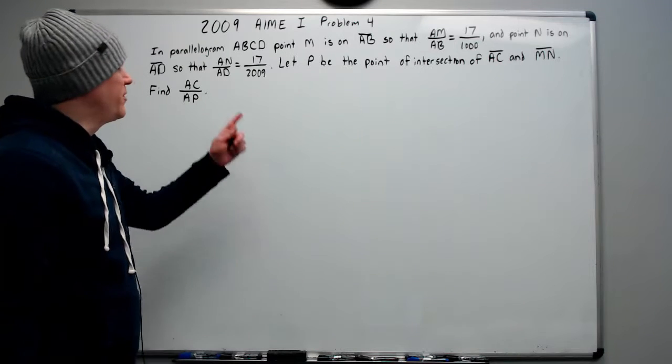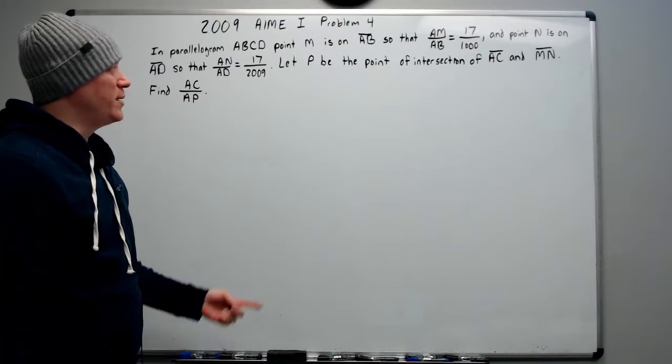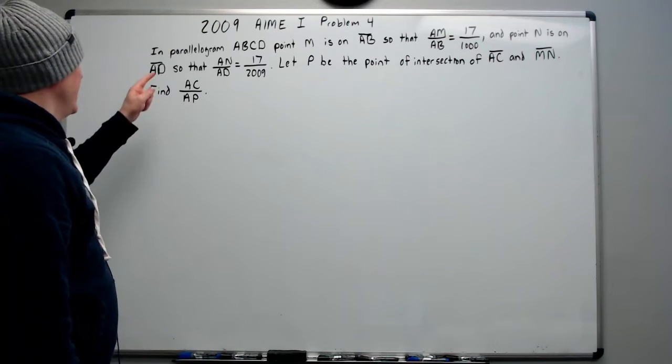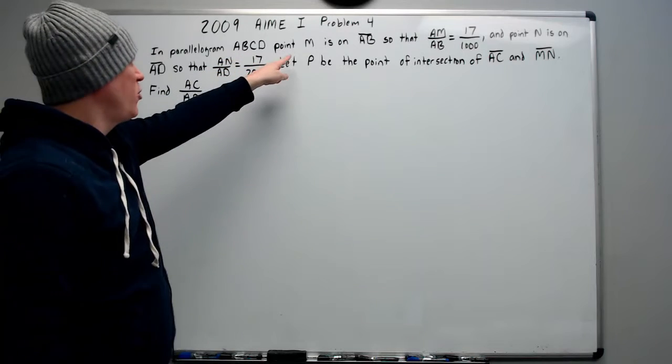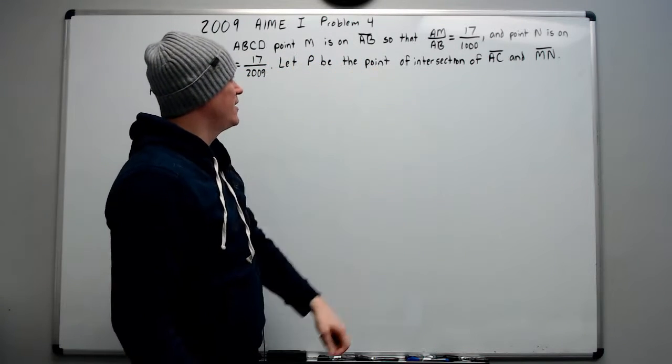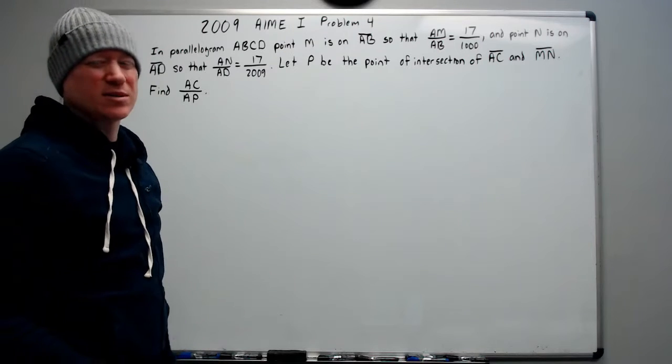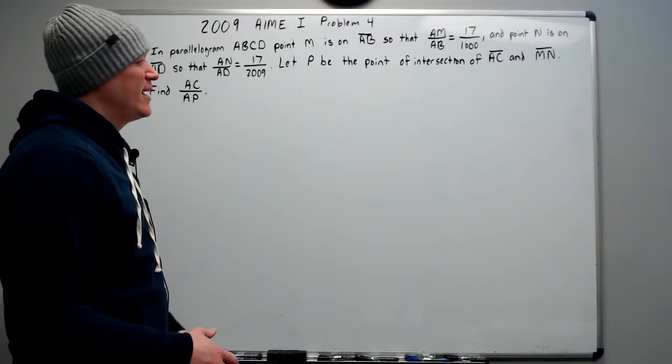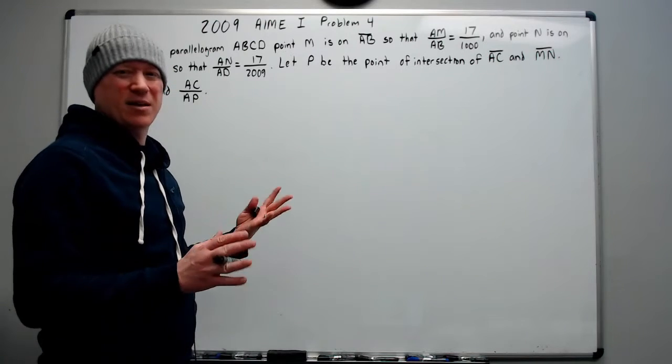Alright, I'm continuing on with the 2009 AIME number one, problem number four. Here we go. In parallelogram ABCD, point M is on AB so that AM over AB equals 17 over 1000.